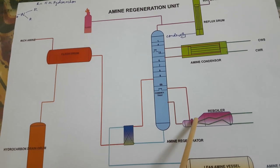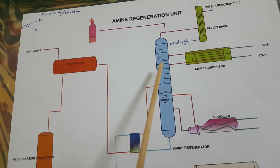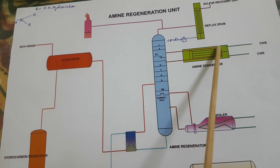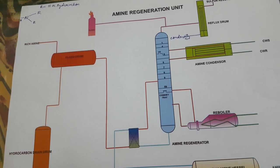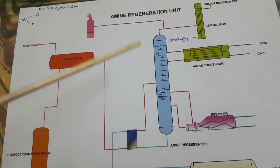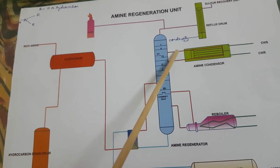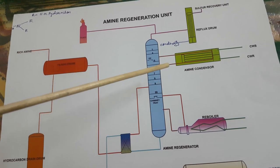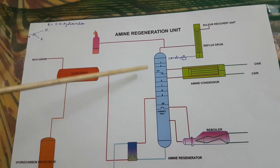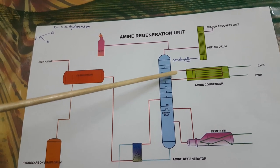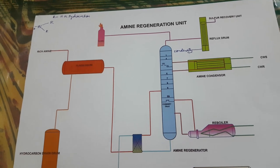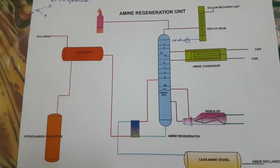There are level control, pressure control, and temperature control systems. If the level increases, the control valve opens and sends rich amine forward; if level decreases, the control valve closes. For temperature control: if temperature increases in the packed or tray column, the amine goes to the condenser and gets cooled; if temperature is too low, the control valve closes and amine does not go to the condenser, so temperature remains stable. If pressure also increases, amine is sent to the condenser — when temperature decreases, pressure decreases according to the gas laws.